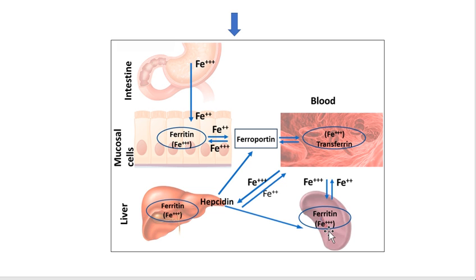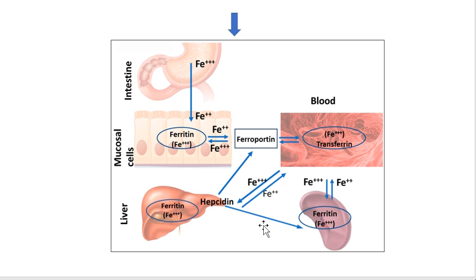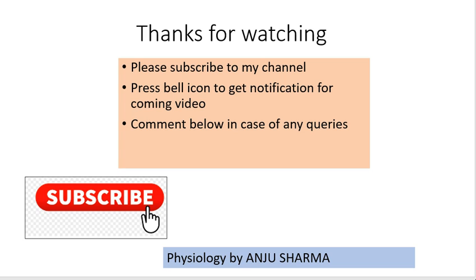If iron is in excess and there is no need, it is transported bound with transferrin to tissues and stored. Serum ferritin shows us how much iron store is available in our body, which is why it is assessed in many examinations. If iron is in excess, the stored amount increases — increasing serum ferritin and hemosiderin — which can cause many diseases. That's all about iron digestion and absorption. Thanks for watching; if you have any queries you can comment.